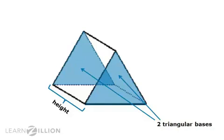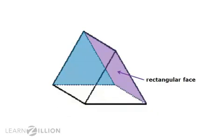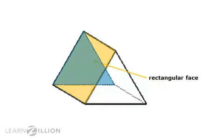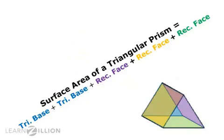All triangular prisms are composed of two triangles and three rectangular faces. We have a purple face, a green face, and a yellow face. To find the surface area of a triangular prism, you will simply add the areas of the faces.